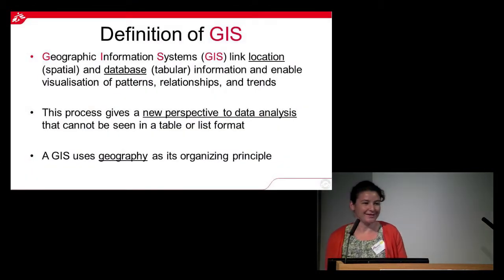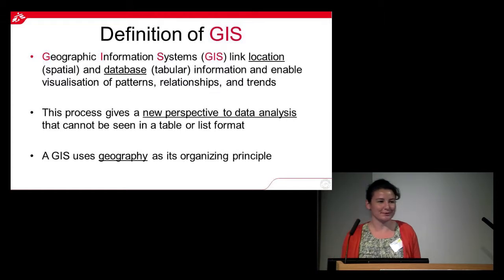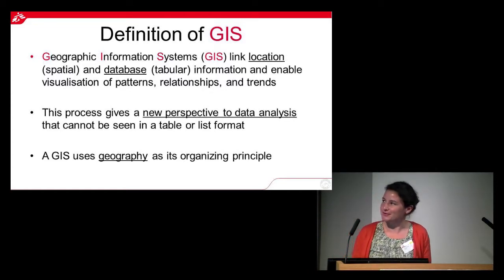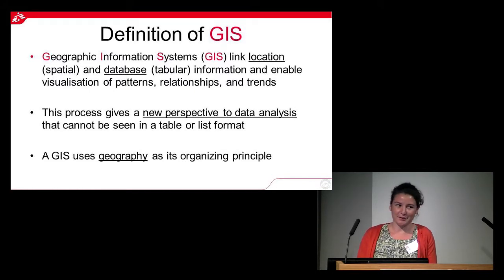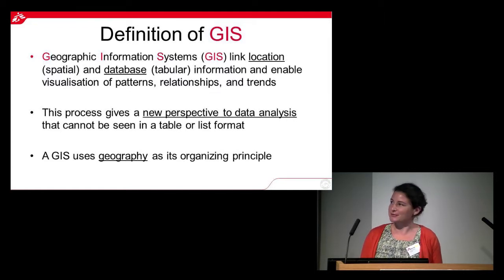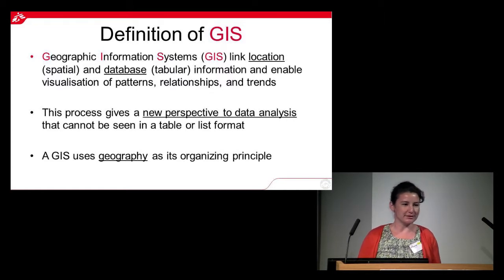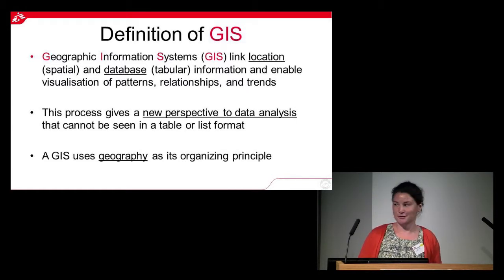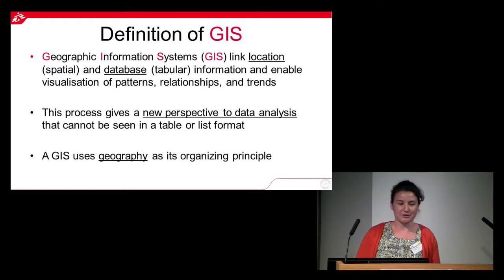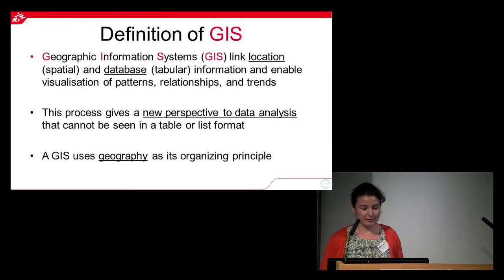So what is a GIS — I know some of you do not like acronyms. GIS is Geographical Information System, and it's not only mapping. When I prepared my presentation, I was asked to change the title to 'mapping,' but GIS is more than that. GIS is database, GIS is GPS, GIS is also remote sensing, and GIS is also the people using this tool — the GIS officer. Basically, a geographic information system links location and database information, and enables visualization of patterns, relationships, and trends.